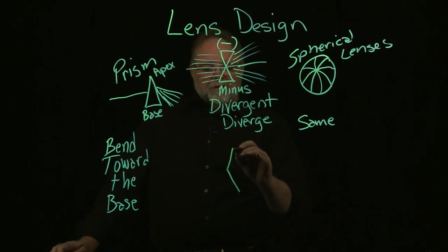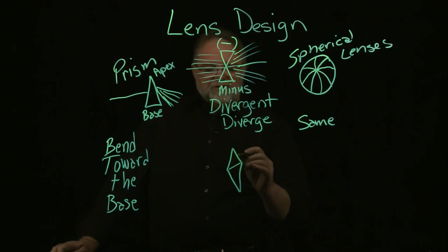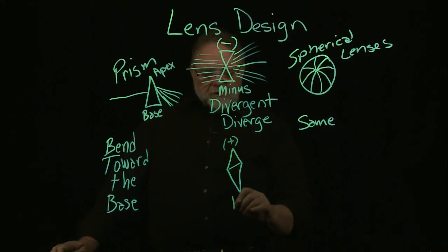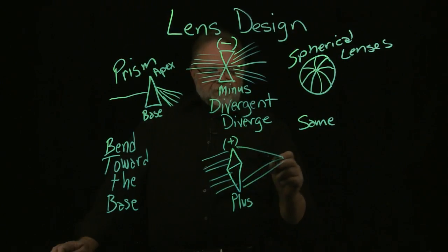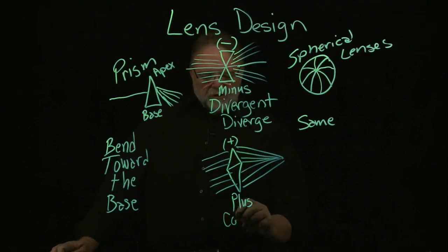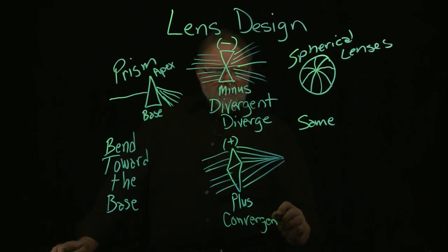The second kind of lens is base to base, and this is a plus lens. As light rays come through it, it focuses and concentrates the rays of light, so it's convergent — the light rays converge.